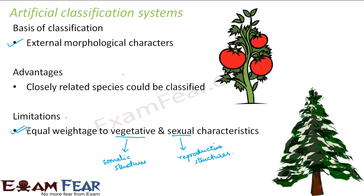As shown in the picture, one is a plant which bears fruit, and the other is a pine tree which does not bear fruit. Both have roots, stem, and leaves, but that doesn't mean they should fall under the same category — more importance has to be given to sexual characteristics. So the artificial classification system was not a great success, though it showed us the way of classification.